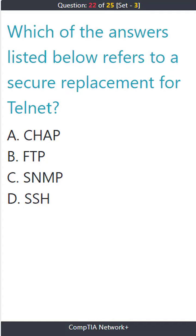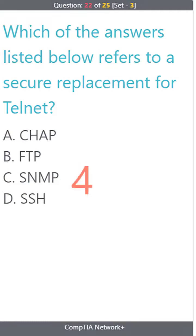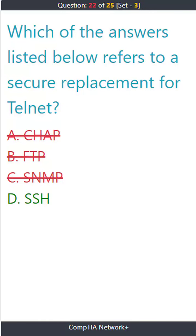Question 22. Which of the answers listed below refers to a secure replacement for Telnet? A. CHAP. B. FTP. C. SNMP. D. SSH. The correct answer is D. SSH.